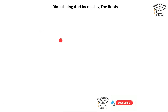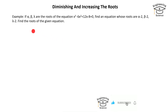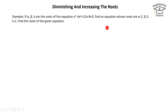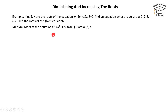We have this example: if alpha, beta, and lambda are the roots of the equation x cubed minus x squared plus 12x minus 8 equals 0, find an equation whose roots are alpha minus 2, beta minus 2, and lambda minus 2. Also find the roots of the given equation.